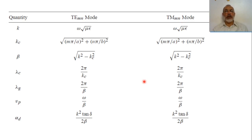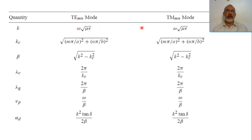We have some quantities or coefficients which are valid for any type of closed waveguide. The propagation wave number of the medium inside the waveguide is omega times the square root of mu-epsilon, and this is valid for both transverse electric and transverse magnetic modes.